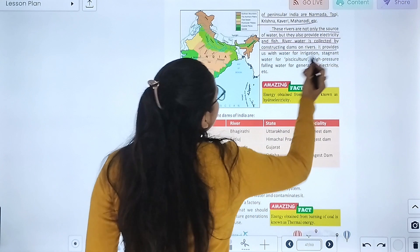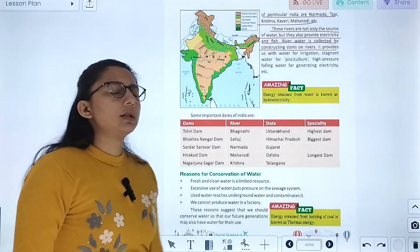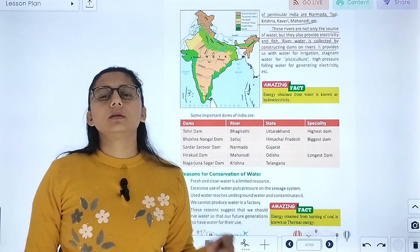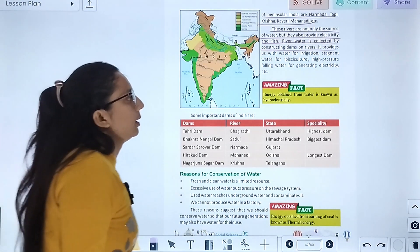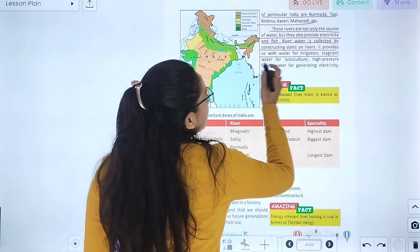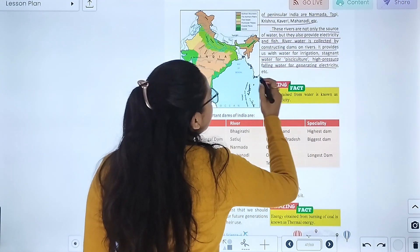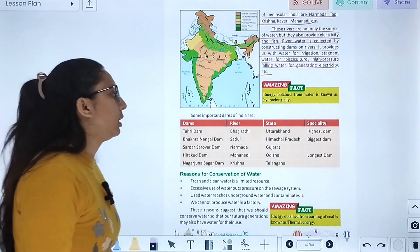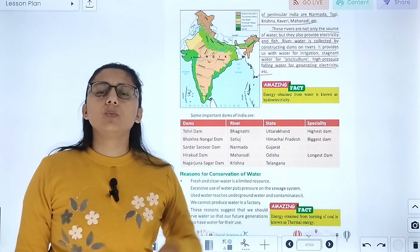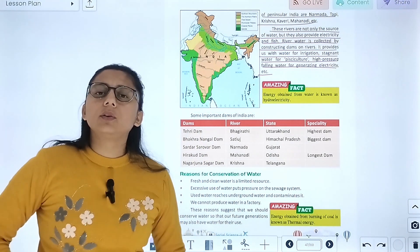River water is collected by constructing dams on rivers. Dams are made to collect river water. It provides us with water for irrigation, stagnant water for pisciculture, and high pressure falling water for generating electricity.